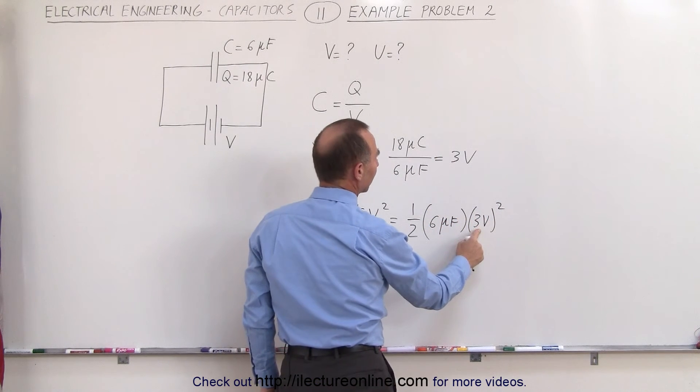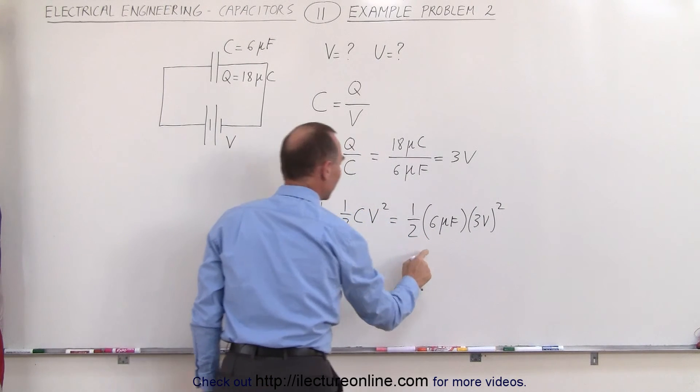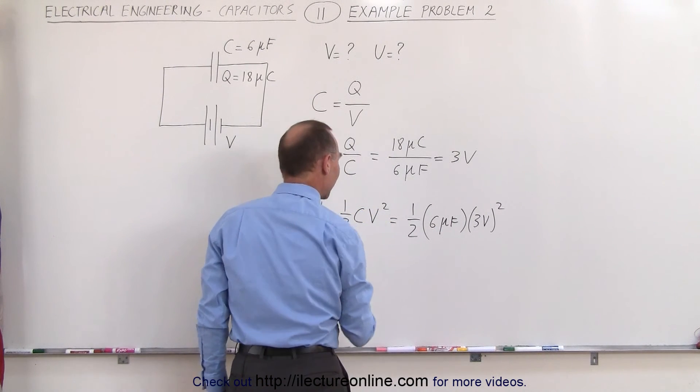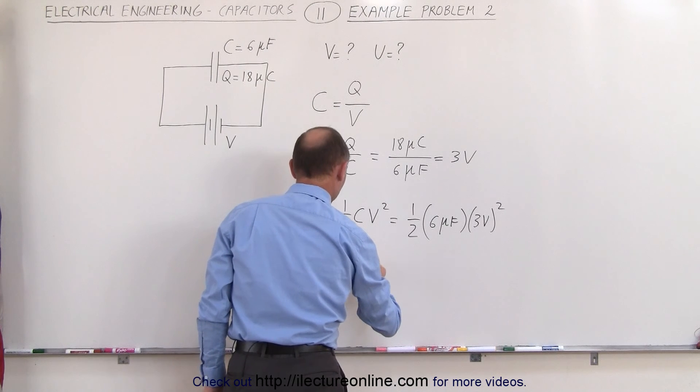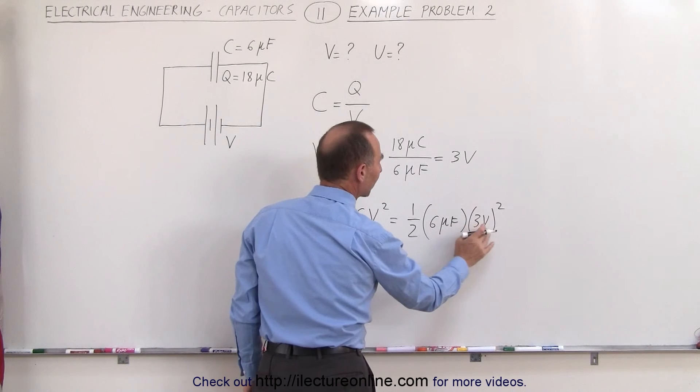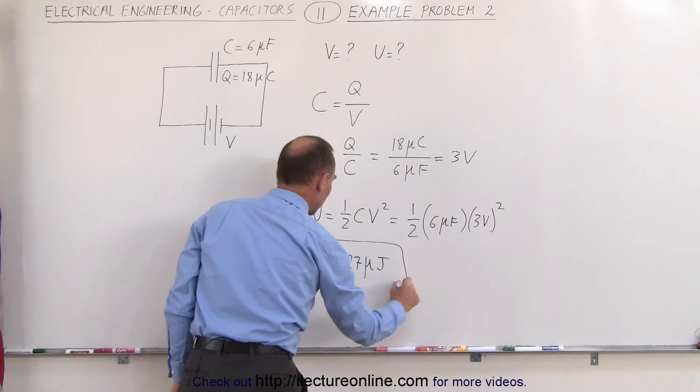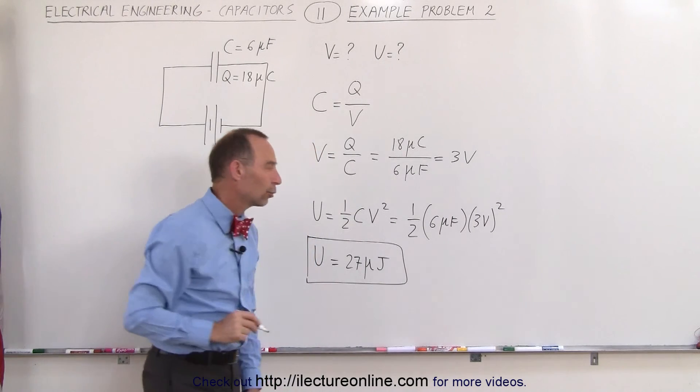So we have 9 times 6, which is 54, divided by 2, which is 27. And the units would be micro, so that's 27 microjoules, because the units farads times voltage squared is equal to joules, and the energy stored in there then would be 27 microjoules.